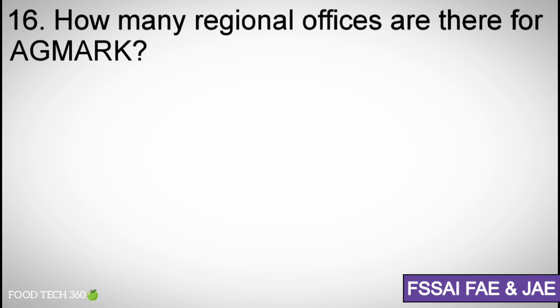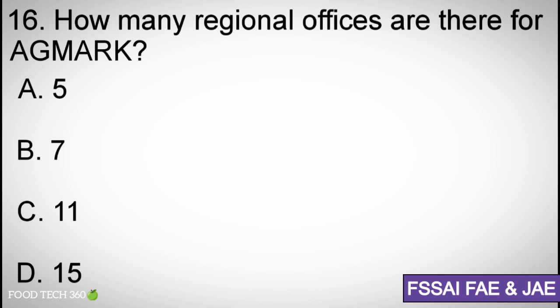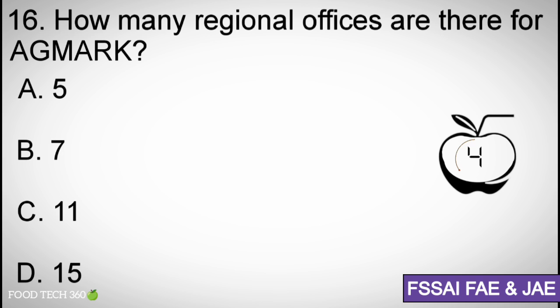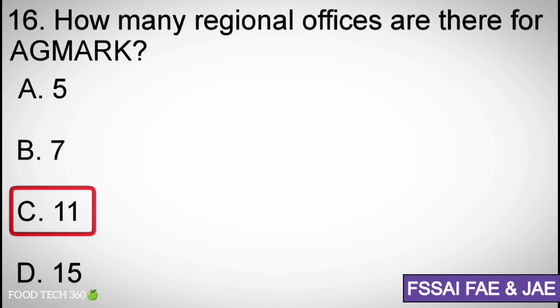Question number sixteen: How many regional offices are there for AGMARK? Options: A) 5, B) 7, C) 11, D) 15. Correct answer: C) 11.